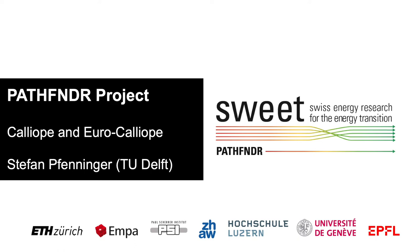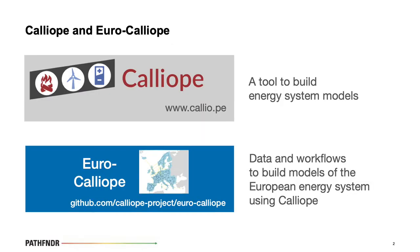Good afternoon everybody. Today I'm going to talk about Calliope — the Calliope modeling software and the European energy system models that we build with it, and how we'll use that in the Pathfinder project. I want to start by differentiating two things: Calliope and Euro Calliope. Calliope is a tool to build energy system models, initially developed during my PhD at Imperial College London, and is now a multi-institution open source software project. Euro Calliope is a set of data and workflows to build models of the European energy system using the Calliope software, initially developed by Tim Tröndle during his PhD at ETH, and being further developed in several projects including Pathfinder.